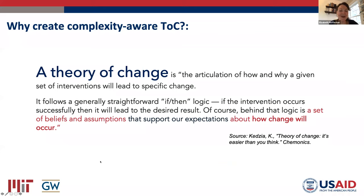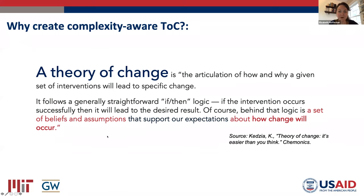Why do we need complexity-aware theories of change? A theory of change articulates how and why a given set of interventions will lead to specific change, and it is often formulated in a very straightforward if-then kind of linear logic. But behind that logic is a set of beliefs and assumptions about how change will occur. In the context of interventions operating in complex systems, the theory of change needs to build on assumptions consistent with our growing knowledge about how change happens in complex systems. Instead of being complexity-blind or complexity-ignorant, it should be complexity-consistent or complexity-aware.